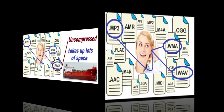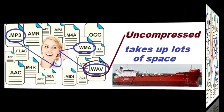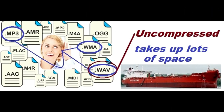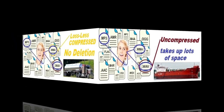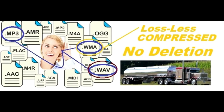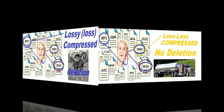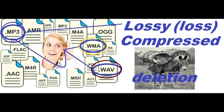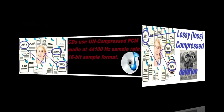WAVE is an uncompressed format and takes up a lot of data space. WMA is compressed with no loss of data. MP3 is also compressed and has some of the data deleted.